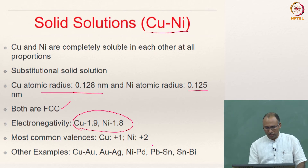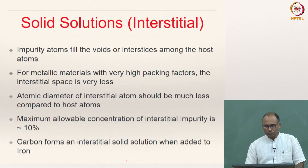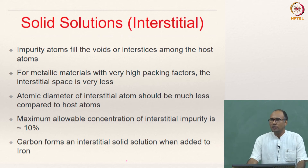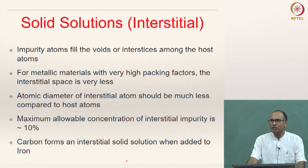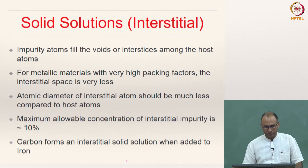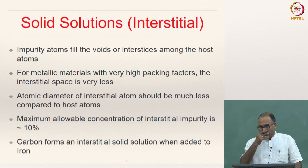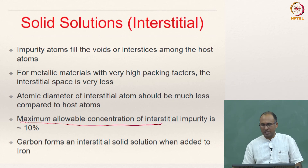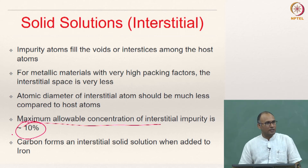Other examples of substitutional solid solutions include copper-gold, gold-silver, nickel-palladium, and tin-bismuth systems. For interstitial solid solutions, the solute atom must be much smaller than the solvent atoms so it can sit in interstitial positions. The maximum allowable concentration of an interstitial impurity is generally only about 10%; you cannot dissolve a material forming an interstitial solid solution beyond that limit.